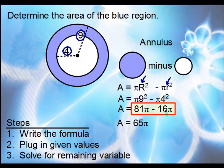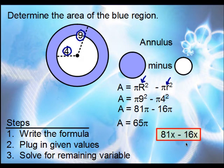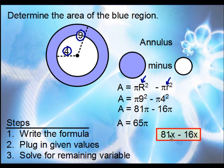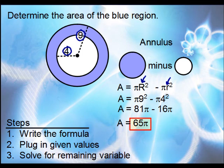You might wonder how we go from 81π − 16π directly to 65π. It works just like combining like terms: just as 81x − 16x = 65x, the same applies with pi instead of x. You can do this with any common factor, including radicals. So 65π is our solution.